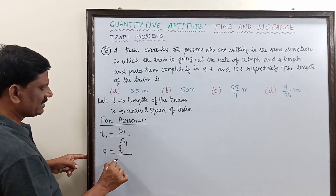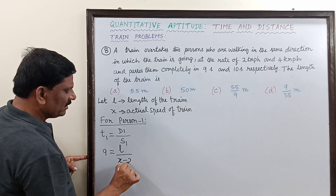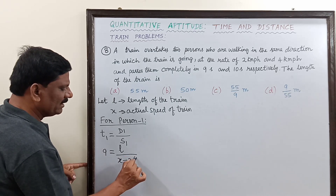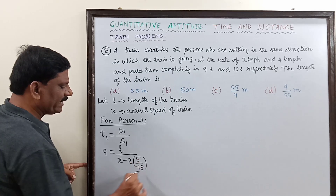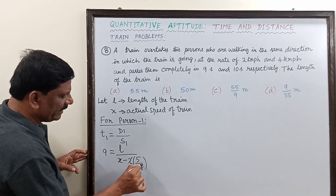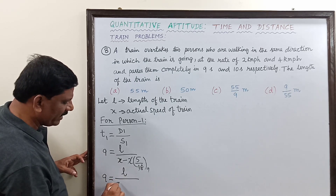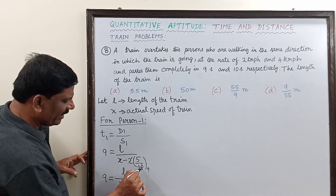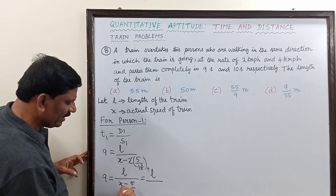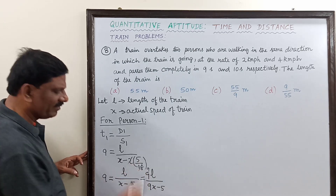The relative speed of the train with respect to the first person is (x minus 2) km/h. Since the left-hand side is in seconds, we convert km/h to m/s by multiplying by 5/18. So 2 km/h becomes 2 × 5/18 m/s. After simplification, the right-hand side becomes L divided by (9x minus 5)/9, which brings (9x minus 5)/9 to the numerator on the left-hand side.